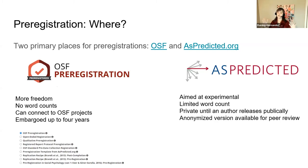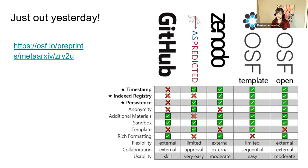For where to pre-register, I'll focus mainly on OSF, though other places exist. 'As Predicted' is really aimed at experimental studies, so for me — since I'm not always doing an experiment — OSF is a better home. A preprint was just released that looks at different platforms for pre-registration and the pros and cons of each.